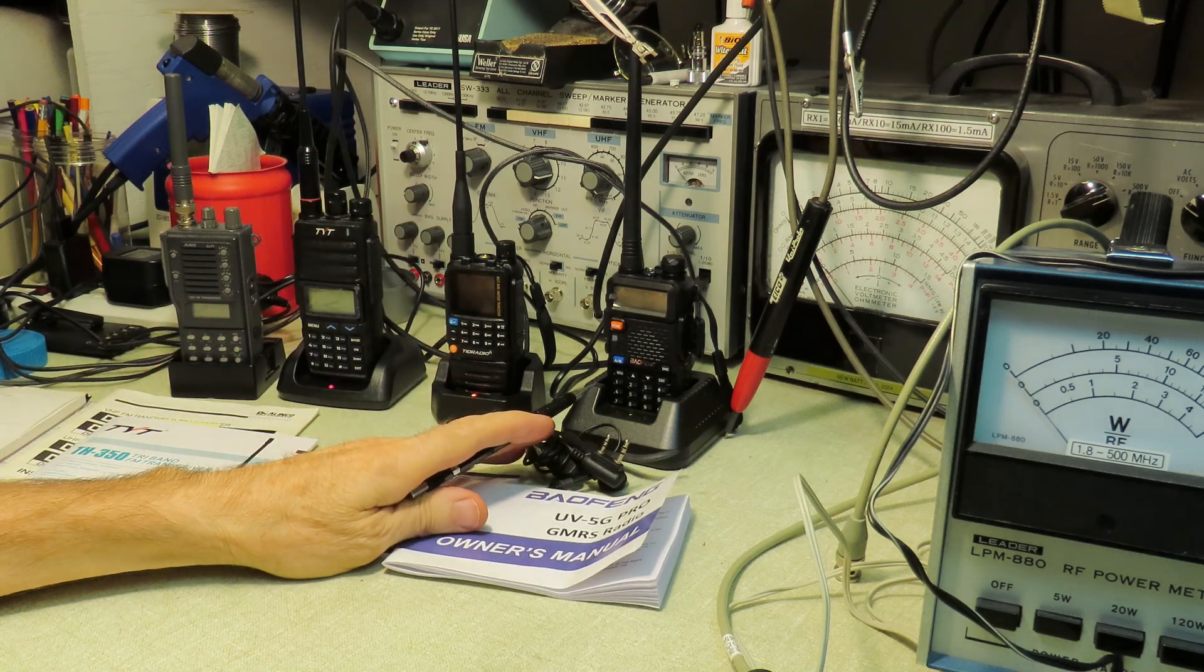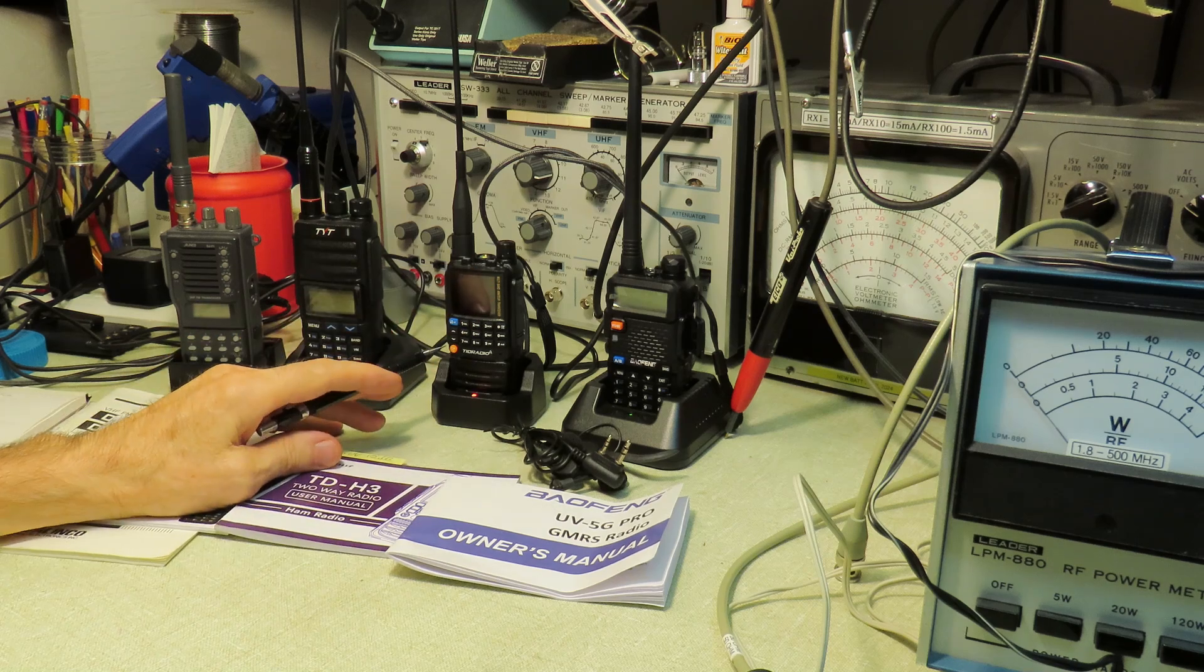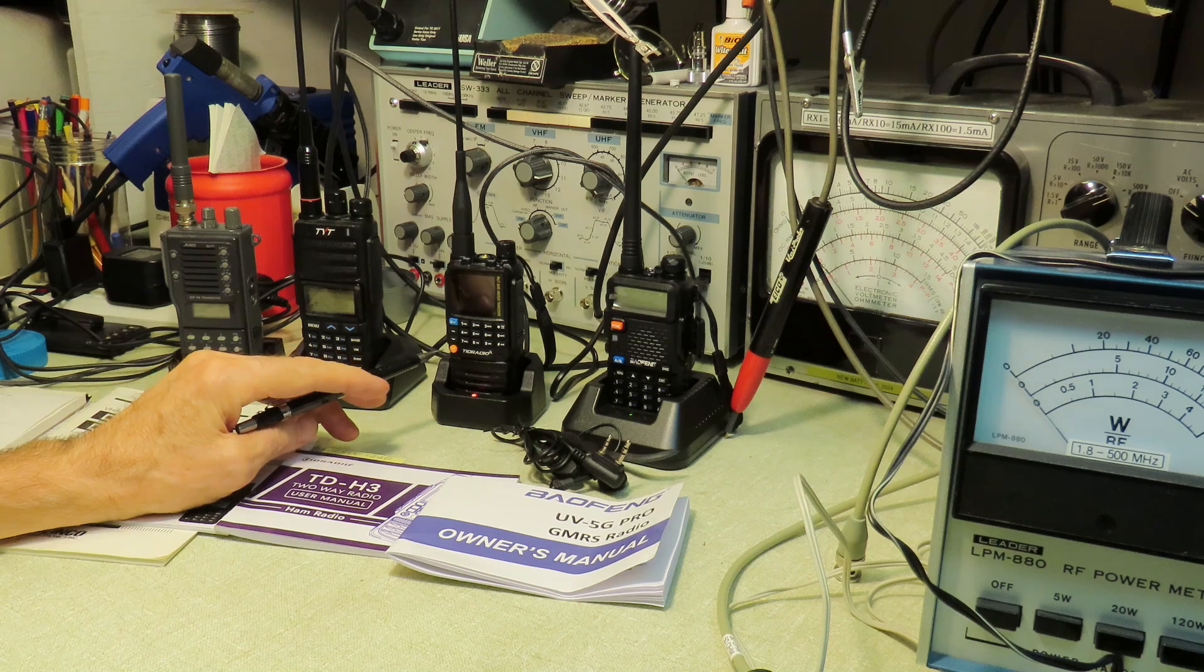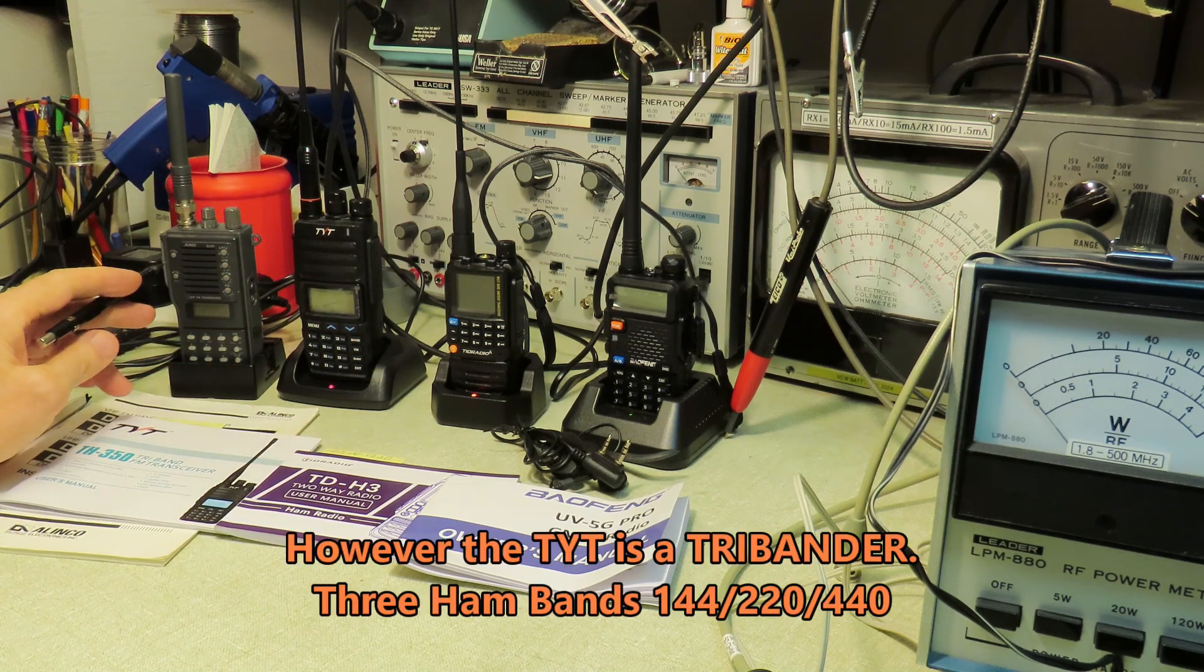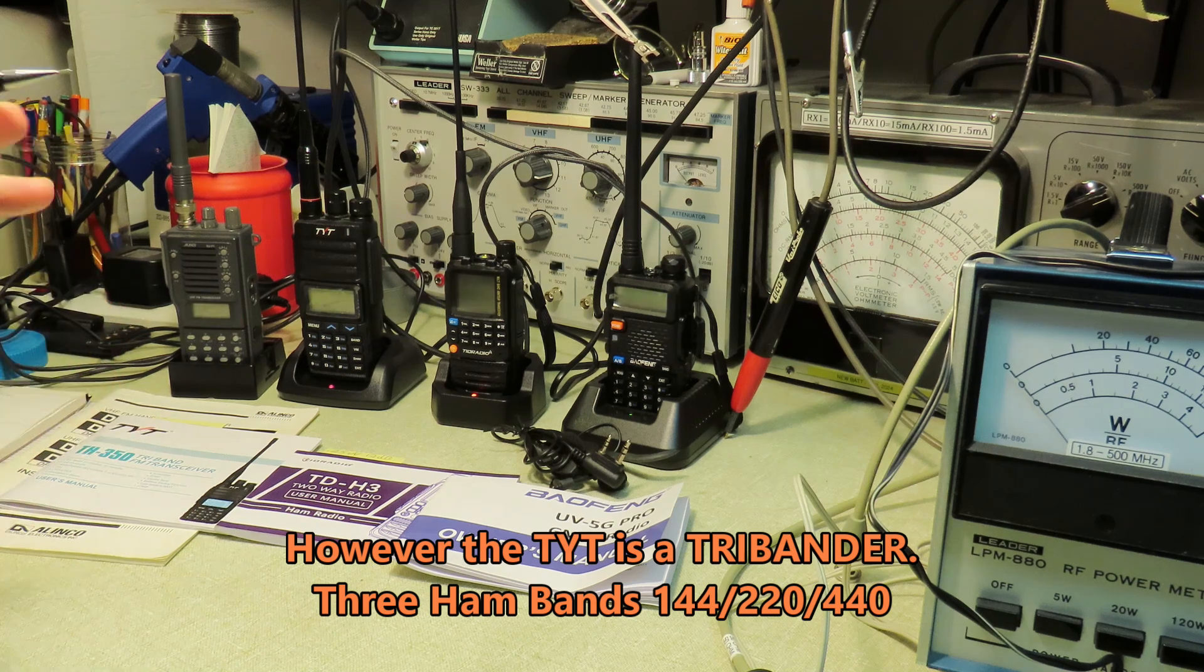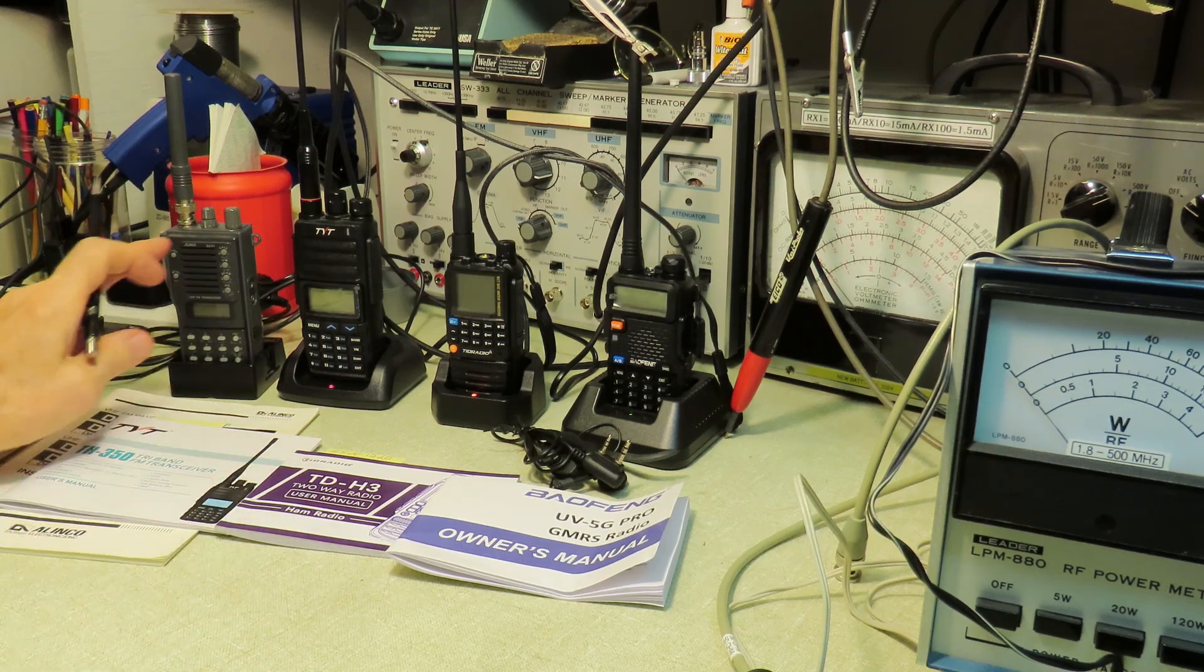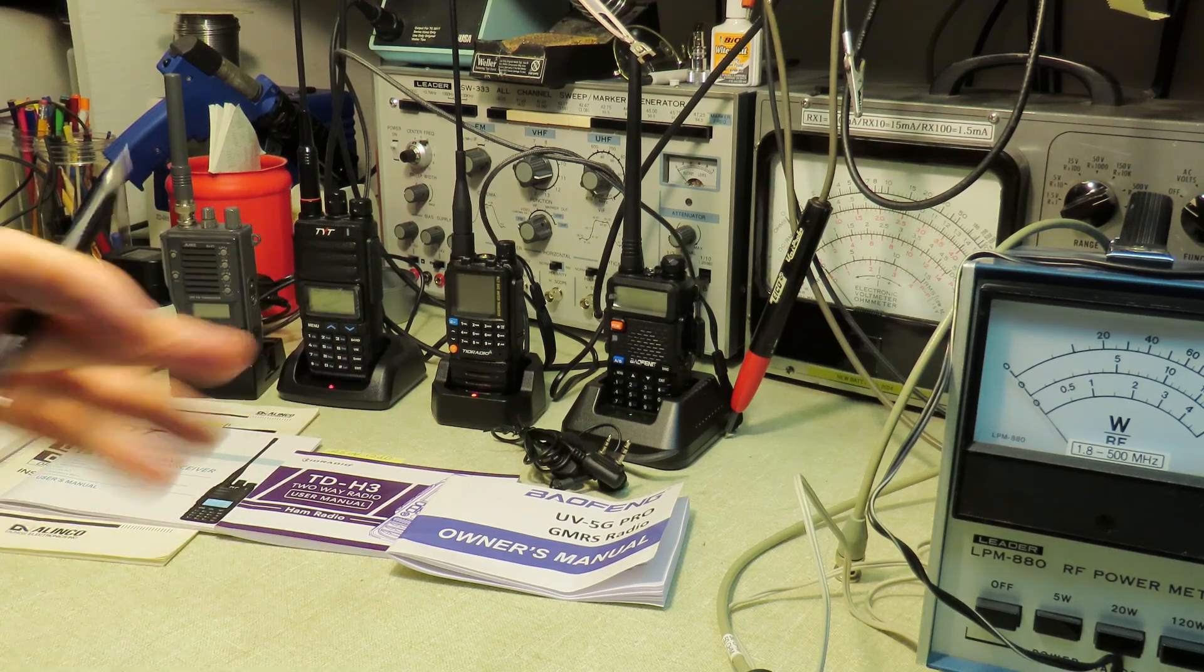This is strictly GMRS FRS, whereas the TID radio is ham band and GMRS. My TYT is strictly ham band, and my old Alinko standby here, which is like my bar, is strictly ham. This thing is a real antique. This belonged to my father, but I kind of use it as a baseline radio.